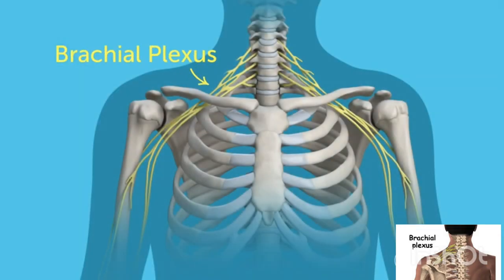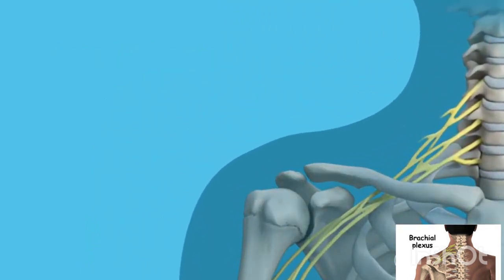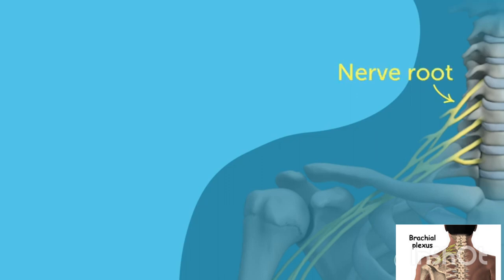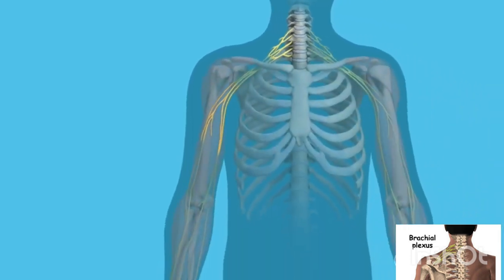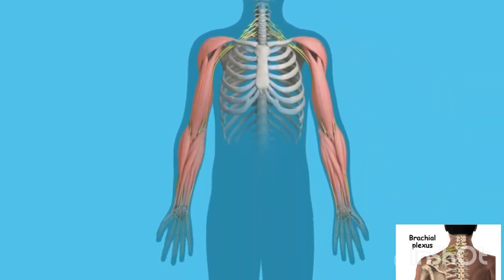The brachial plexus is a network of nerves that stem from the spinal cord in the neck. Each nerve comes out of the spinal cord as a nerve root. These nerve roots divide and combine like subway tracks to eventually become the nerves of the shoulder, arm, and hand.